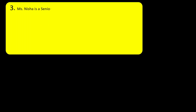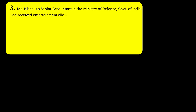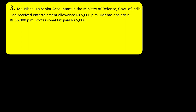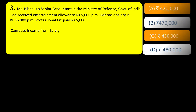Let's proceed to question number 3. Ms. Nisha is a senior accountant in the Ministry of Defense, Government of India — she is a government employee. She received entertainment allowance of Rs. 5,000 per month, her basic salary is Rs. 35,000 per month, and professional tax paid is Rs. 5,000. Compute income from salary. Note that we need to compute salary income, and these are the four options available.